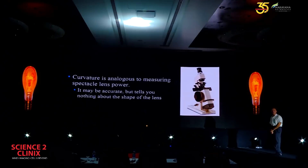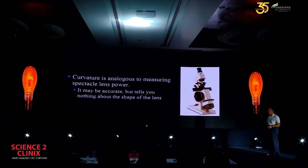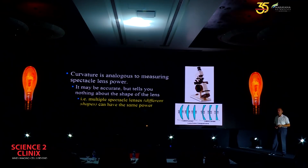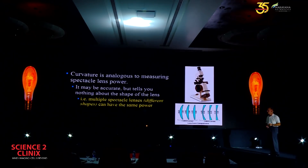Curvature is analogous to measuring a spectacle lens power. If I gave all of you a lens and had you look at it in a lensometer, you'd all come up with the same answer — very accurate. But it actually tells you absolutely nothing about the shape of the lens. Multiple different shapes can give us the same power. So power does not imply shape, and curvature does not imply shape.